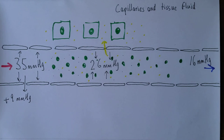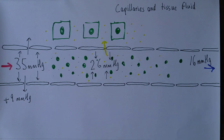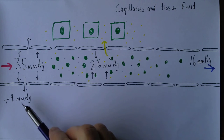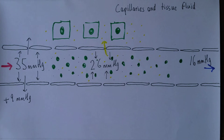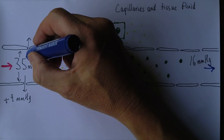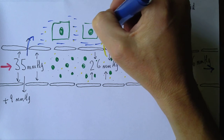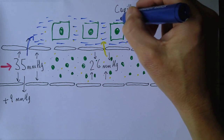That net filtration pressure of 9 mmHg is positive, and it causes the filtration of tissue fluid. There is a little bit of osmotic pressure in the tissue fluid that would slightly raise this figure, but it's very small so we won't include it. So tissue fluid is being formed at the arterial end of the capillary. This is essential because it's the diffusional medium between the blood and the cells.